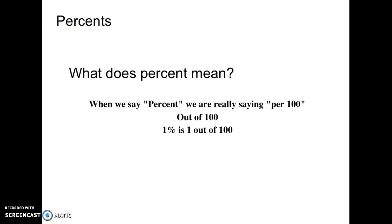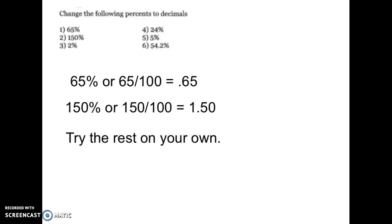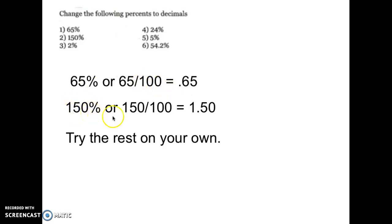Now that you've added that to your math notebook, let's talk about changing percentages to decimals. Here I have 65%, which is 65 over 100, or 0.65 — that is also read as 65 hundredths. Let's try 150% — that's the grade Mr.